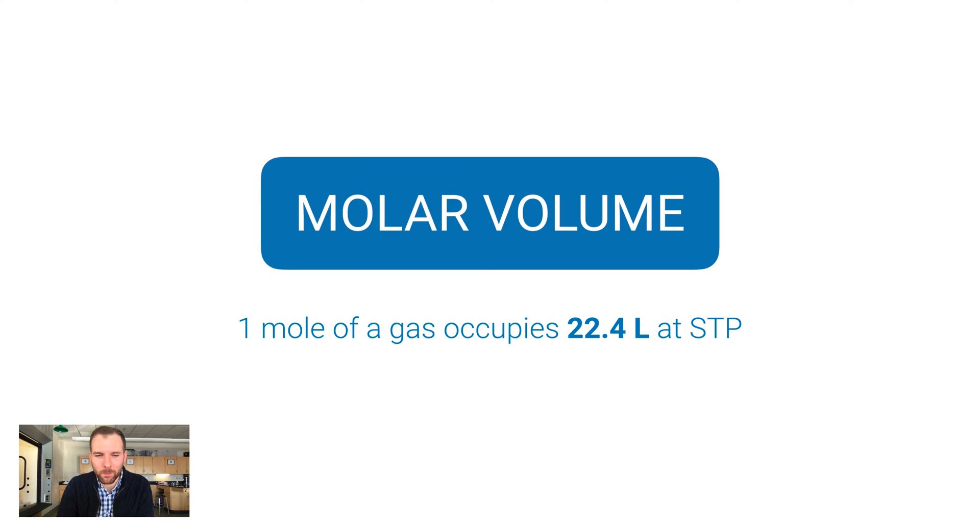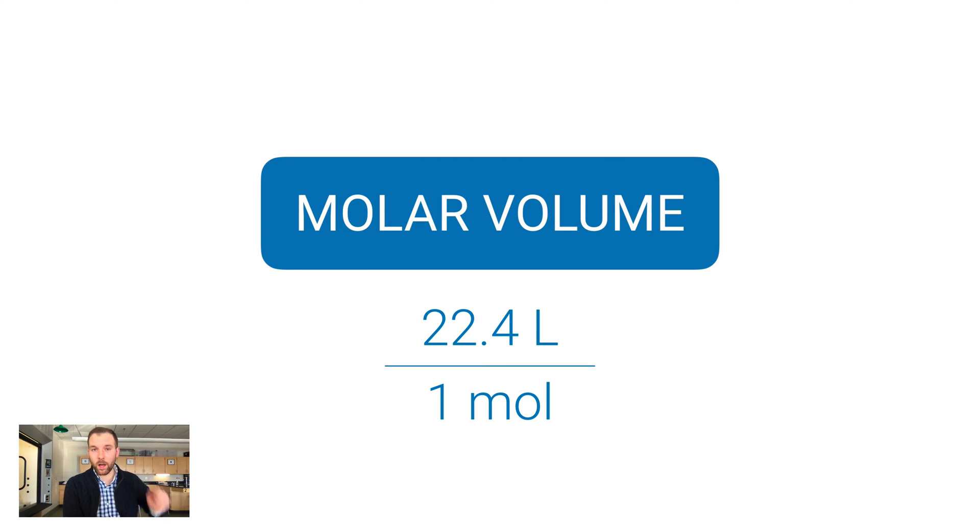This is according to Avogadro. He said that equal amounts of gases at the same temperature and pressure contain the exact same volume of gas, and that is called the molar volume. Now one mole of gas occupies 22.4 liters at standard temperature and pressure. If the temperature or pressure changes, that volume is going to change as well. But if you take that 22.4 liters and put it over one mole, sometimes it's helpful to think of molar volume in that way, because oftentimes we're using this quantity to convert between volume and amount, or between liters and moles.